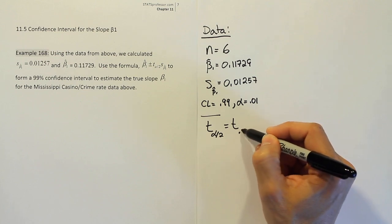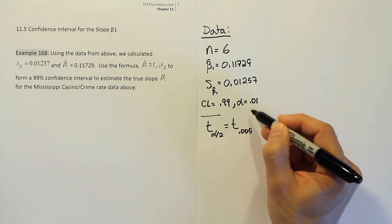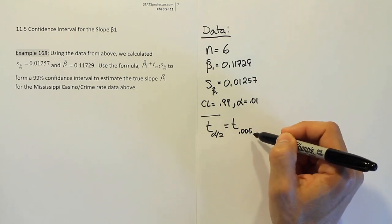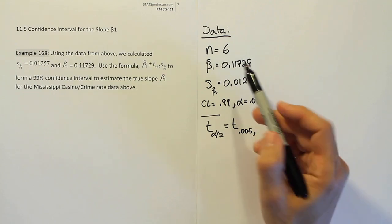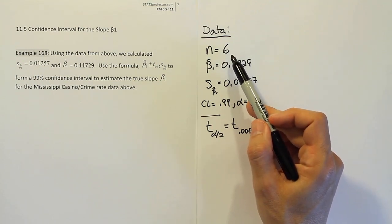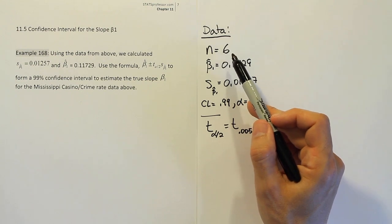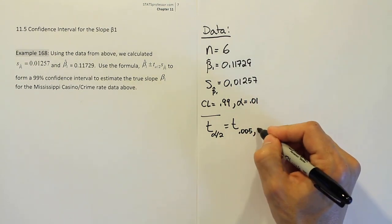So that's t 0.005. If you take half of 0.01, you get 0.005. Now the degrees of freedom, remember for this section, because we're estimating two quantities in the model, we're going to have n minus 2 degrees of freedom. So it'll actually be 4.